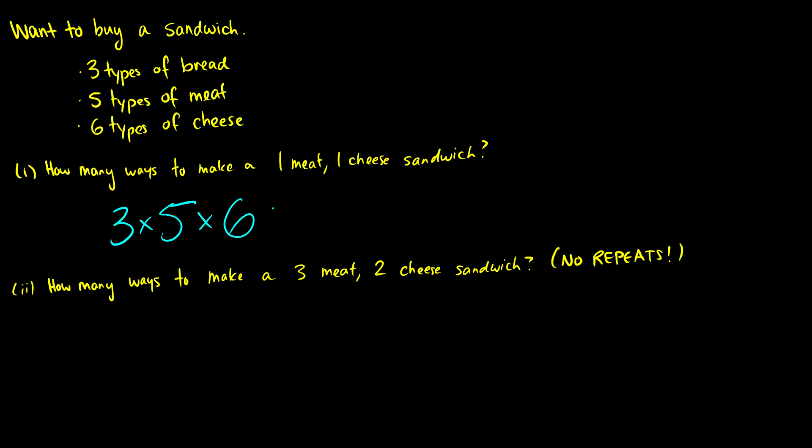So we have three bread, five meat, and six cheese to choose from, which means we have a total of 90 combinations. This is just like the ice cream problem in the previous lecture video.